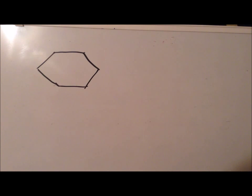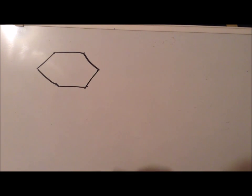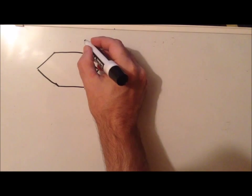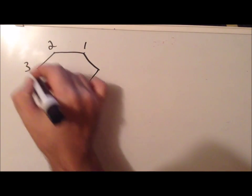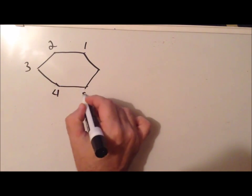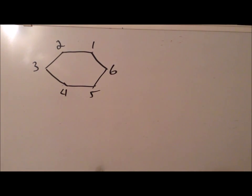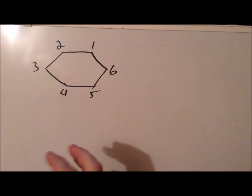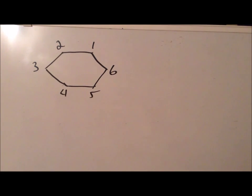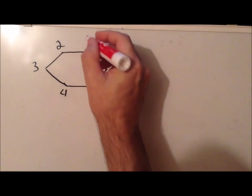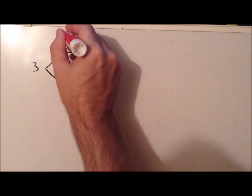To elucidate the proper rotations available to this particular shape, let's number the vertices counterclockwise. We want to see what a particular rotation does in terms of moving one vertex to another. One rotation available is to rotate by 60 degrees — a 60 degree rotation.